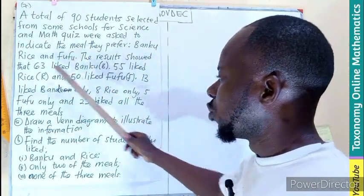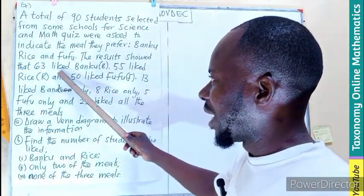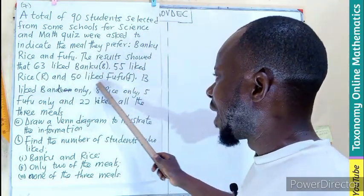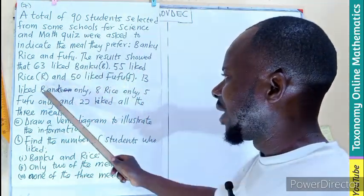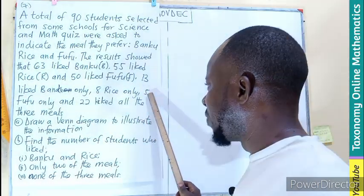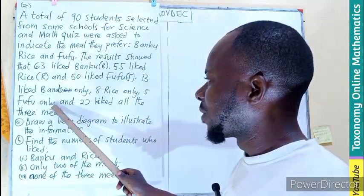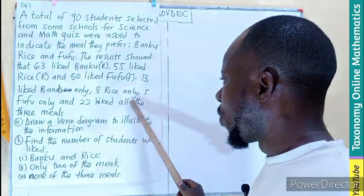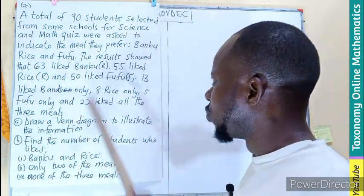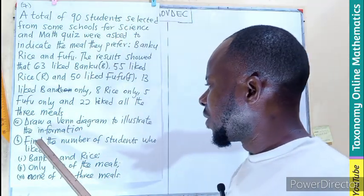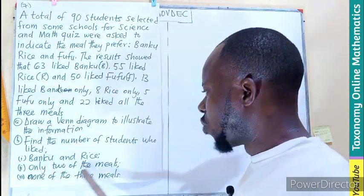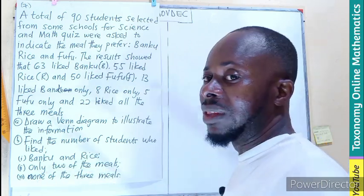The results show that 63 like Bangku, 55 like Rice, and 50 like Fufu. 13 like Bangku only, 8 Rice only, and 5 Fufu only, and 22 like all three meals. We are drawing a Venn diagram to illustrate this information, find the number of students who like Bangku and Rice, only two of the meals, and none of the three meals.